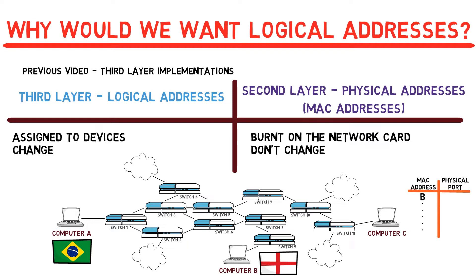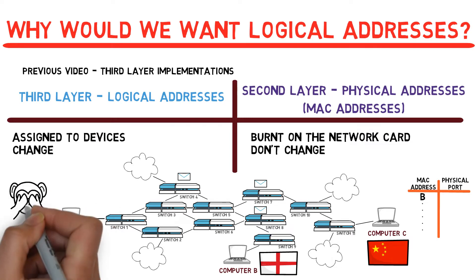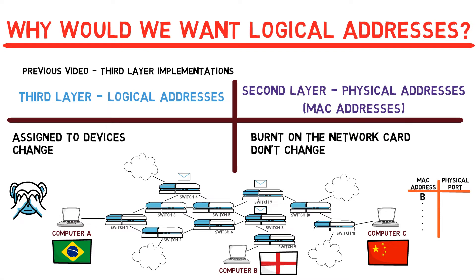Furthermore, what happens when a switch doesn't know a specific address? Let's say computer A sends a message to computer C in China. Switch 5 has never received a message from C, so it doesn't know its address. It will thus have to forward this message to all of the switches connected to it. If those switches don't know where computer C resides either, the message will keep propagating through the network, leading to unnecessary load. This approach is clearly not optimal — we are asking a switch located somewhere in the world to forward a message given an address that is somewhat arbitrary.